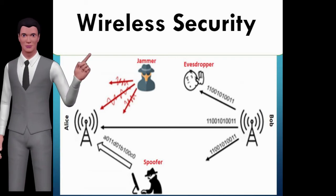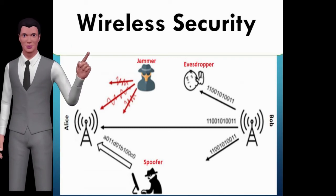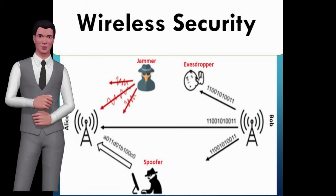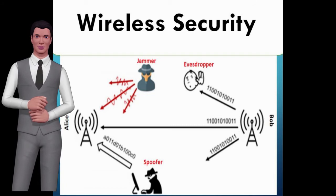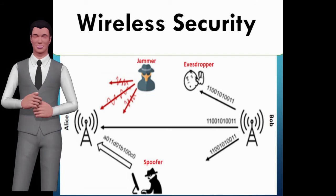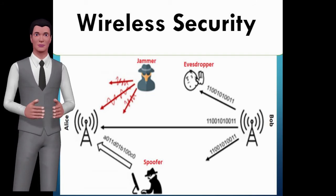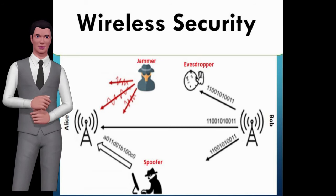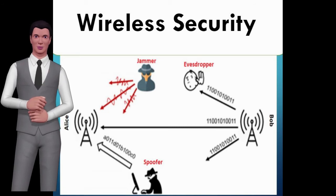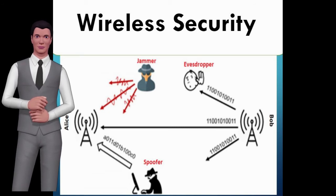Physical layer security, PLS, has recently emerged as a novel concept that can integrate and may even substitute encryption-based schemes, which suffer from many drawbacks and practical issues in future wireless systems.